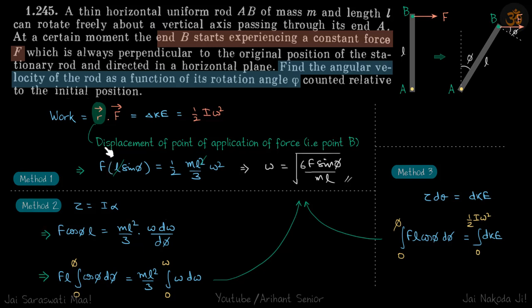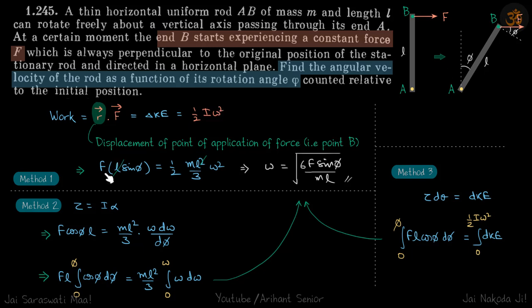We are going to solve it with three different methods. First is by work: we can express the energy of the rod in terms of angular velocity, and the external work done on the rod is F times the distance traveled by point B. Work equals R dot F, which equals the change in kinetic energy: half I omega squared. R is the displacement of the point of application of force — point B — which has moved L sine Phi in the direction of force. So this becomes F times L sine Phi equals half I omega squared, where I equals ML squared over three.